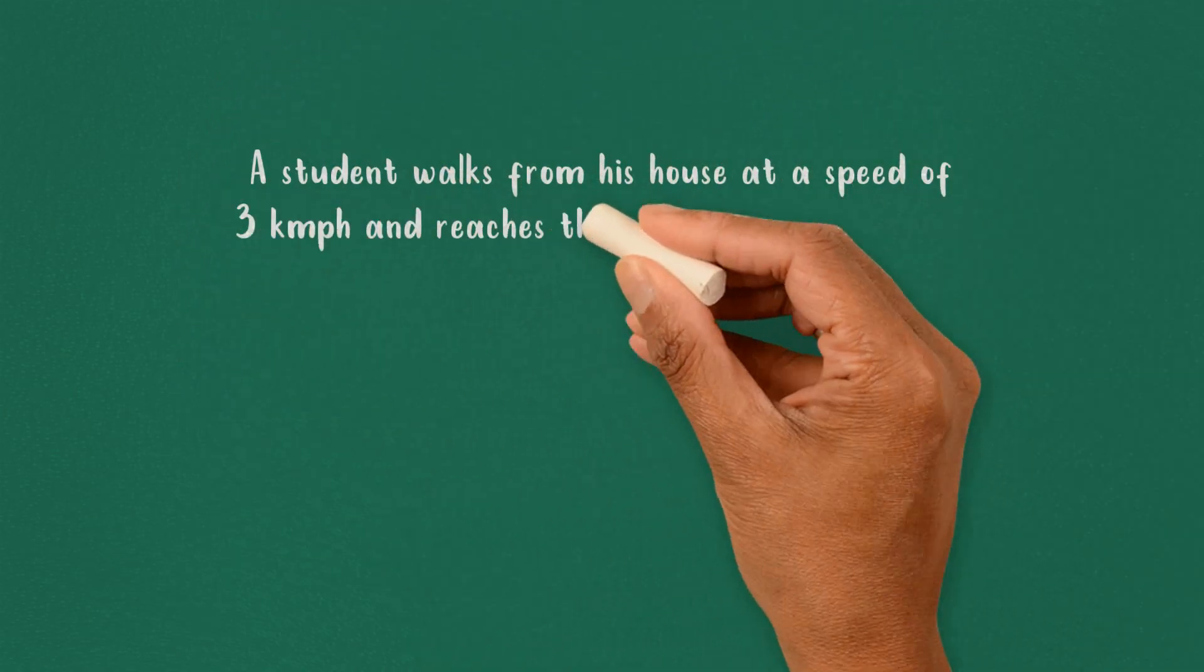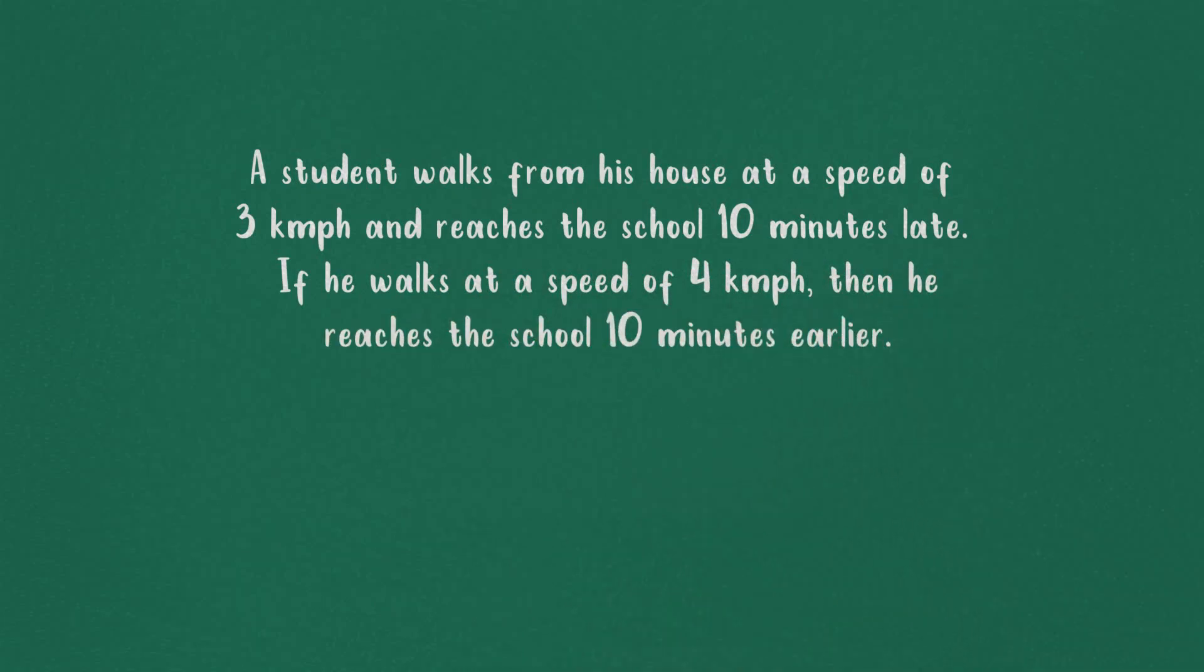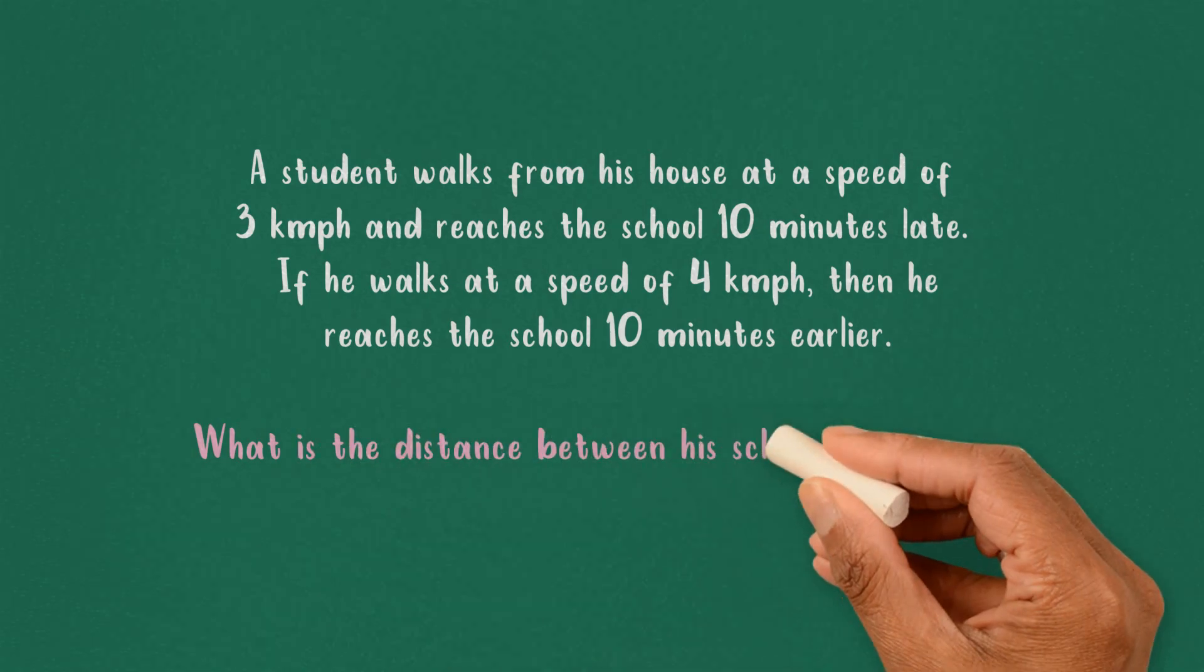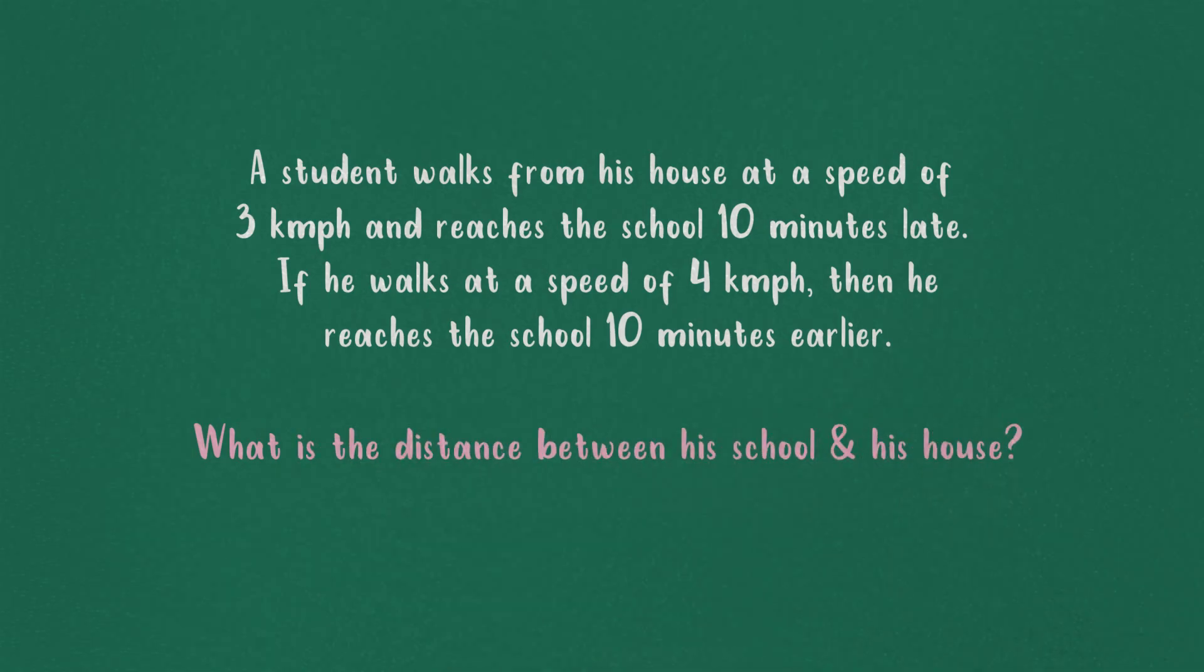A student walks from his house at a speed of three kilometers per hour and reaches the school ten minutes late. If he walks at a speed of four kilometers per hour, then he reaches the school ten minutes earlier. What is the distance between his school and his house?